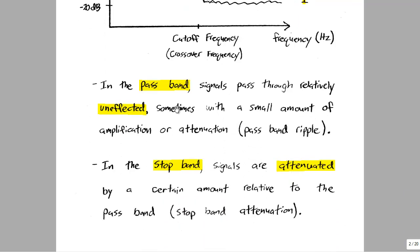An overview of what these terms mean: the pass band is where signals pass through unaffected, sometimes with a small amount of attenuation or amplification, called the pass band ripple. In the stop band, signals are attenuated by a certain amount relative to the pass band, called the stop band attenuation.